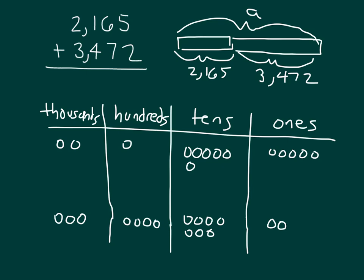When we're adding these numbers together, we'll start in the ones place. So we have 1, 2, 3, 4, 5 ones and 2 ones, which equals 7 ones. So we'll go ahead and record that there.